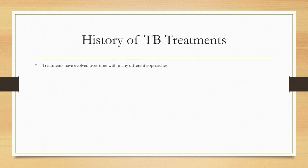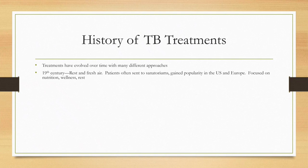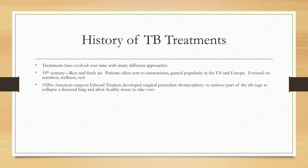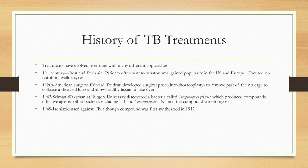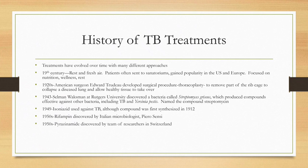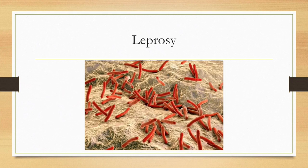The treatments for TB evolved over time. Rest, fresh air, and sanatoriums gained popularity in the United States and Europe, focusing on nutrition, wellness, and rest. In the 1920s, surgical procedures were tried — a thoracoplasty — to remove diseased lung and allow healthy lung tissue to take over. In 1943, Selman Waksman at Rutgers discovered a bacterium called Streptomyces, which produced compounds effective against TB and Yersinia, named streptomycin. In 1949, isoniazid was discovered to be used against TB, even though it was first synthesized in 1912. In the 1950s, rifampicin, pyrazinamide, and ethambutol were discovered — which are the drugs used in modern treatment.